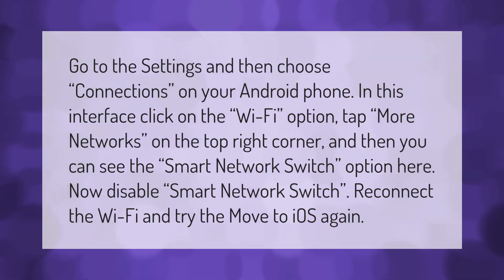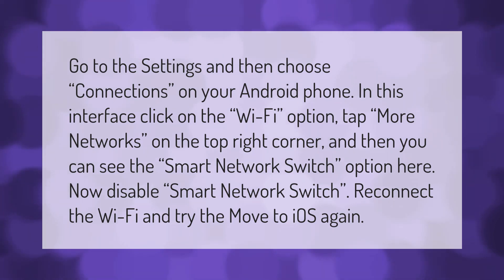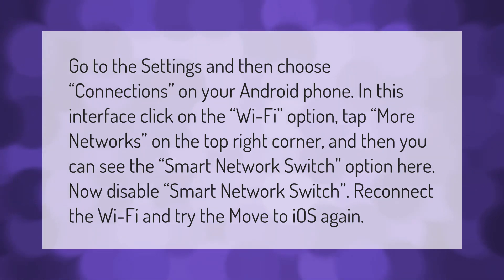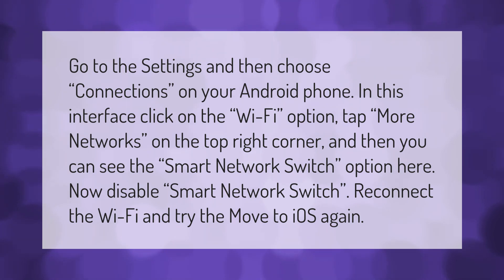Go to Settings and then choose Connections on your Android phone. In this interface, click on the Wi-Fi option, tap 'More Networks' on the top right corner, and you can see the Smart Network Switch option. Disable Smart Network Switch, reconnect the Wi-Fi, and try the Move to iOS again.